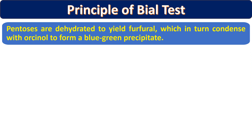The principle of Bial's test is that pentose is first dehydrated. When carbohydrates are heated along with a mineral acid or strong acid or dehydrating agent, they lose water molecules — roughly three molecules of water are released — and ultimately give us a furfural derivative. This is partially similar to Molisch's test, where dehydration is done by H₂SO₄ and the furfural reacts with alpha-naphthol to give a purple color compound.